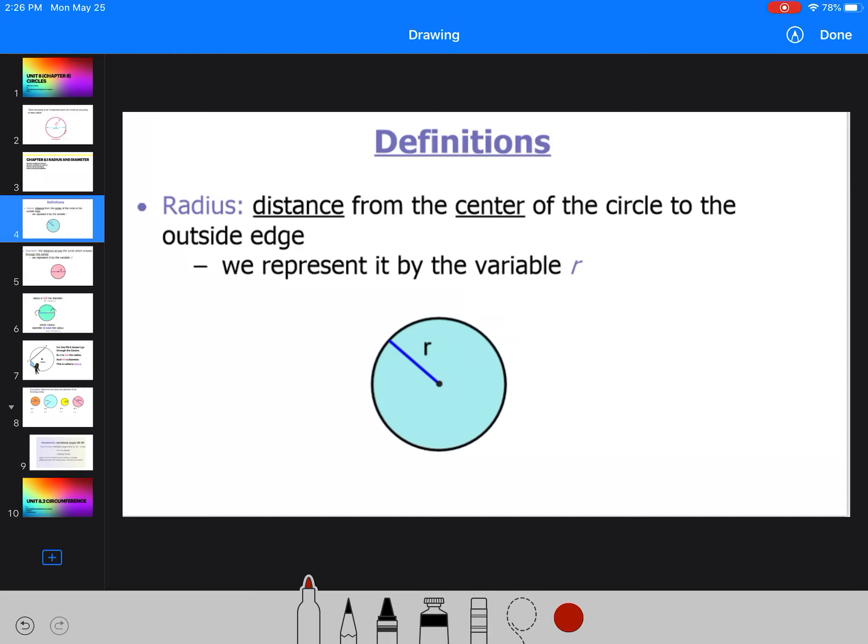Radius, formal definition, is a distance from the center of the circle to the outside edge. And we always represent it with a lowercase r. So it's from the center to the outside edge. That is your radius. Make sure you make a note of that.